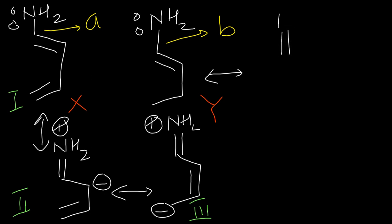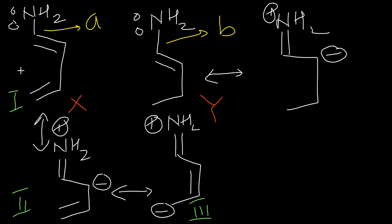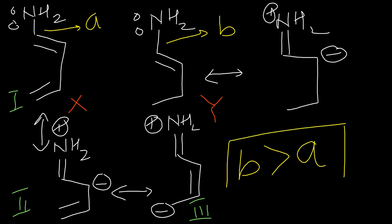In the other case (molecule Y), we have just two structures — one with single bond and one with double bond — but this molecule is much more stable, so single bond character will be more there. Since molecule X has two double bond characters contributing more double bond character to the hybrid, single bond character between nitrogen and carbon will be more in Y. So B is greater than A.